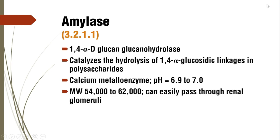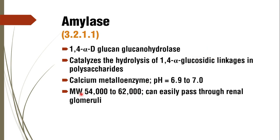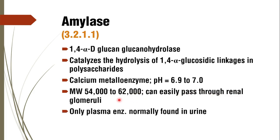Its molecular weight is 54,000 to 62,000. Remember this — it can easily pass through renal glomeruli because of its smaller molecular weight. It is the only enzyme which is normally found in urine and is normally excreted in urine.